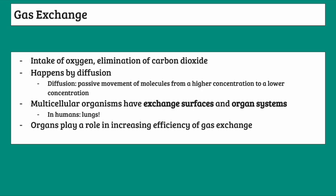So, gas exchange in humans is the intake of oxygen and the elimination of carbon dioxide, which is necessary for survival. This happens by diffusion, which is the passive movement of molecules from a higher concentration to a lower concentration. Multicellular organisms have exchange surfaces and organ systems — in humans, these are the lungs.